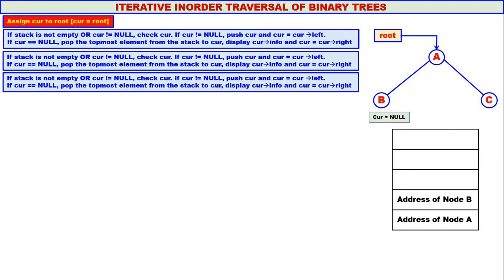Again, if stack is not empty or curry not equal to null, check curry. In our case, stack is not empty but curry is null — one of those conditions is true. If curry is equal to null, pop the topmost element from the stack to curry. We pop the address of node B and assign it to curry. Display curry info — B is displayed — and curry moves to curry's right. Since there is no right child for B, curry becomes null.